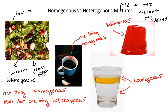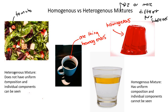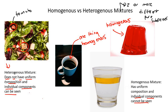So here are the definitions. Heterogeneous — like the chicken salad — does not have uniform composition. Uniform just means it all looks the same. The individual components can be seen; I could see the chicken, the tomato, the lettuce. Homogeneous has uniform composition, so it all looks the same, and the individual parts cannot be seen. For example, I cannot see the coffee granules, I cannot see only the water, I cannot see the jelly powder separately. So those are homogeneous.